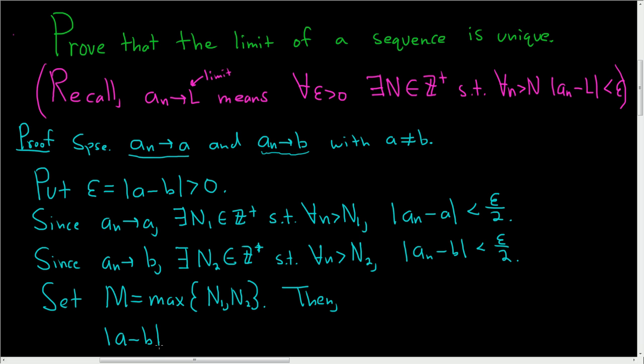So we know that a minus b, this is equal to... Now we want to somehow involve these other two inequalities. We want to involve this one and we want to involve this one. So then I probably should have said for all n bigger than capital M.